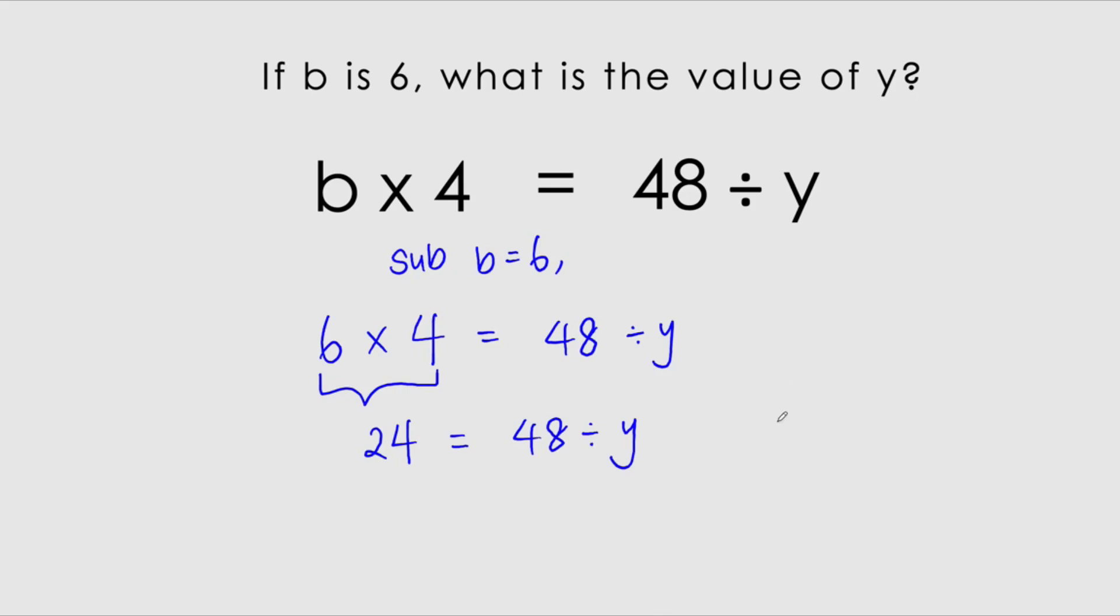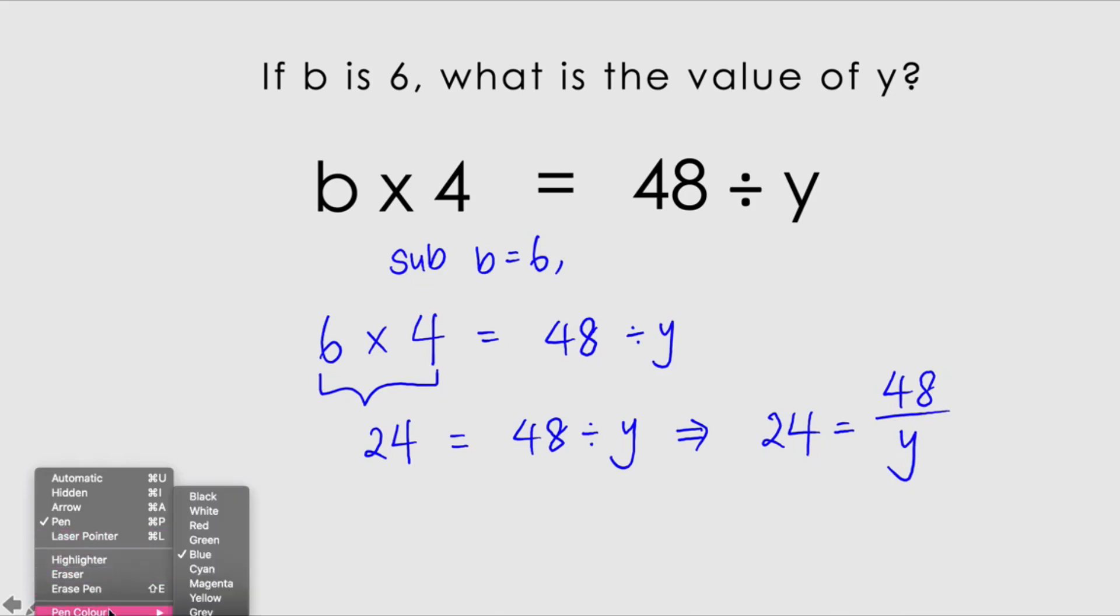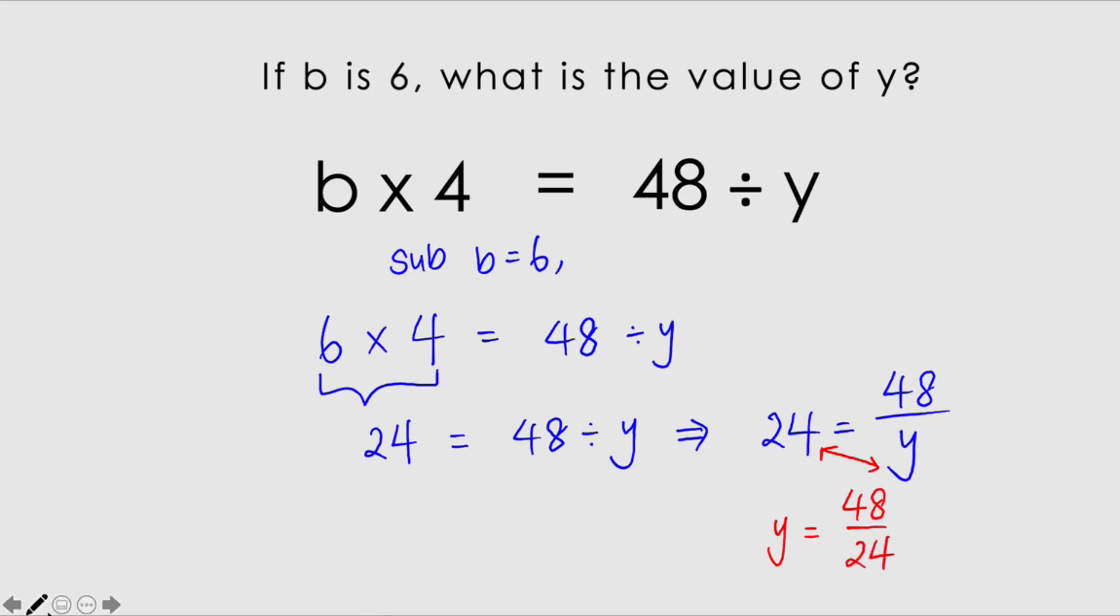Or another way you can do is this is where we can manipulate this into this. So 24 is equals to 48 on top divided by y. Now, at this point, I'm going to quickly change the color to show you what we're going to do now. I am going to actually swap these two. So that becomes y is equals to 48 divided by 24. So that's actually an extra step that you can do or a shortcut that you can do. So from here, we can see that y is actually equals to 2.